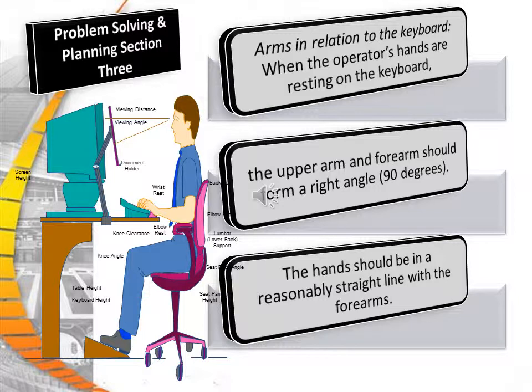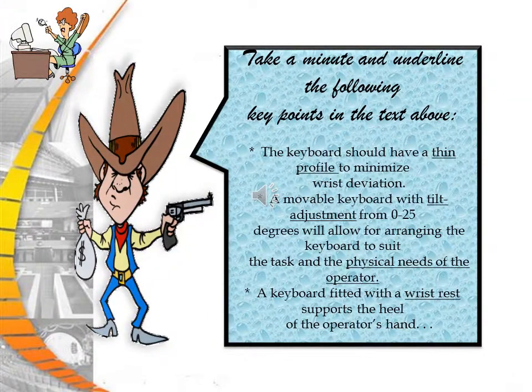The arms in relation to the keyboard: when the operator's hands are resting on the keyboard, the upper arm and forearm should form a right angle of 90 degrees, and the hand should be reasonably straight with the forearms. Key points to remember: the keyboard should have a thin profile to minimize wrist deviation; a moveable keyboard with a tilt adjustment of 0 to 25 degrees suits both the task and the physical needs of the operator; and a keyboard fitted with a wrist rest supports the heel of the operator's hand.